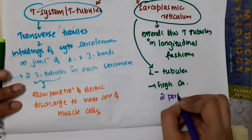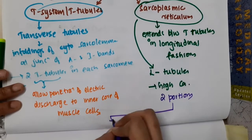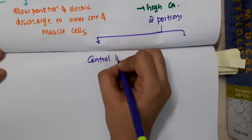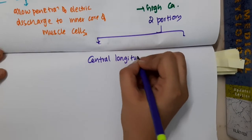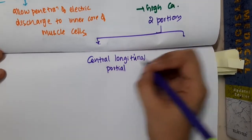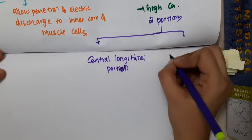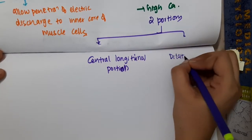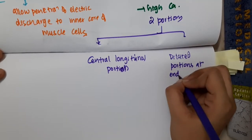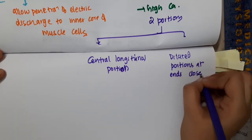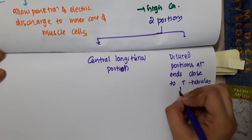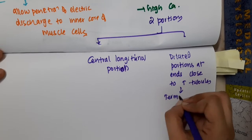The sarcoplasmic reticulum has two portions: one is the central longitudinal portion, and the other is the dilated portions at the ends, which are close to the T-tubules. These dilated portions are called terminal cisternae.